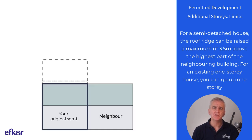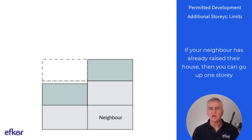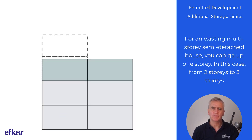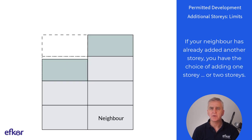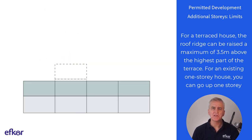For a semi-detached house, the roof ridge can be raised a maximum of 3.5 meters above the highest part of the neighboring building. For an existing one-story house you can go up one story. If your neighbor has already raised their house, then you can go up one story. For an existing multi-story semi-detached house you can go up one storey — in this case, from two to three stories. If your neighbor has already added another story, you have a choice of adding one story or two stories. For a terraced house, the roof ridge can be raised a maximum of 3.5 meters above the highest part of the terrace.